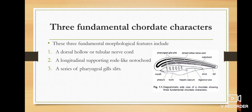The third fundamental character is a series of pharyngeal gill slits, which are just present at some stage. You can see the diagram — in this diagram, a hollow dorsal nerve cord is drawn, a notochord is drawn, and pharyngeal gill slits are drawn. So these are the three fundamental characters which represent Chordate animals.